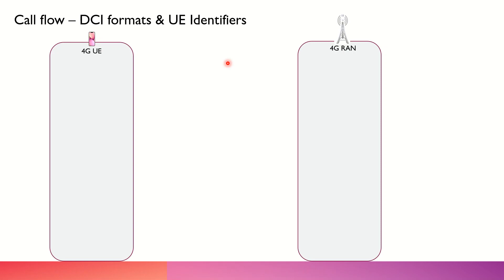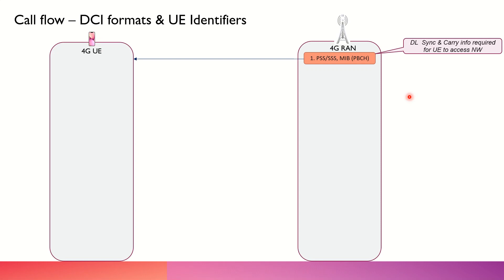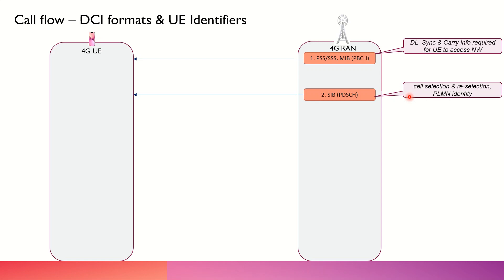Let's understand the PDCCH and the DCI formats in a little bit more detail and talk about the different identities that have been allocated to the UE during these transactions. We are considering a simple call flow of initial access procedure where we have the PSS, SSS, and the PBCH being transmitted by the E-NodeB to the user equipment. This is for the initial synchronization, and then there is some cell selection, reselection thresholds, and the PLMN identity being transmitted by the SIB messages in the PDCCH.